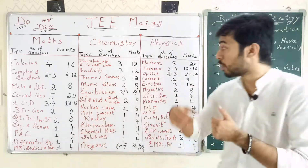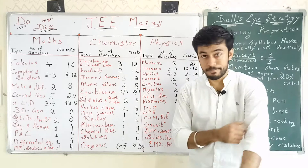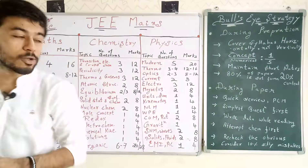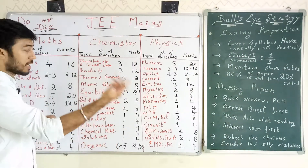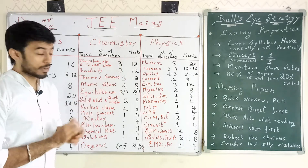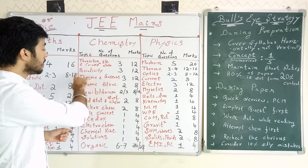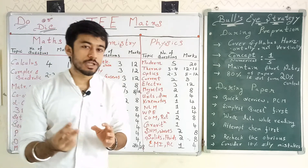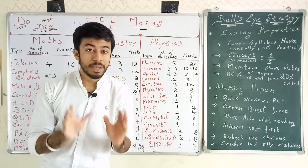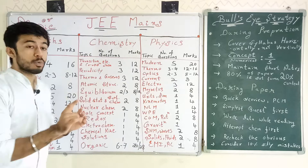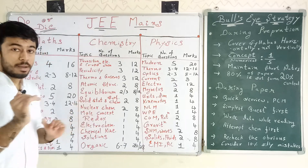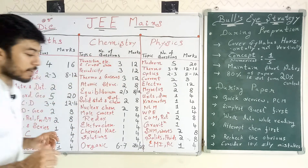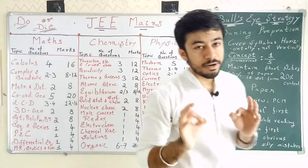Now let's get to Chemistry. Starting with Transition Elements and Coordination Compounds — 3 questions, 12 marks, a big and important topic. Periodicity — 3 questions, 12 marks; two questions will be straightforward and one will be difficult. Thermodynamics and Gaseous State — also very important.